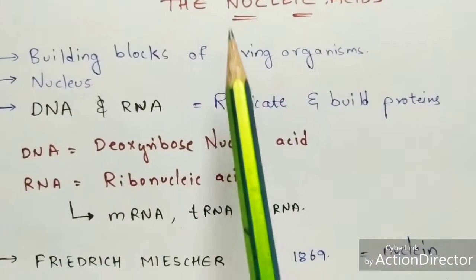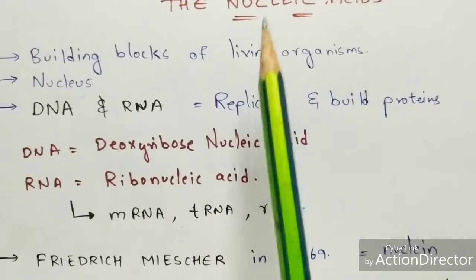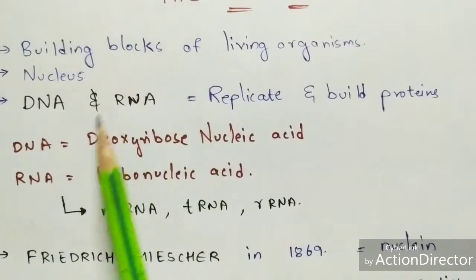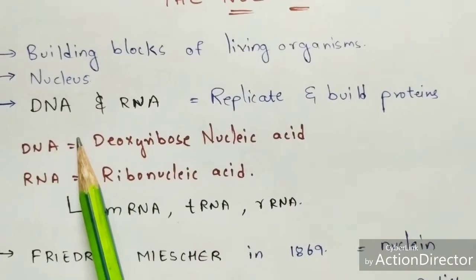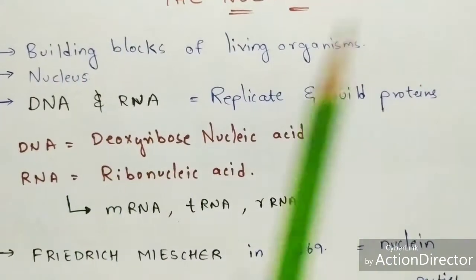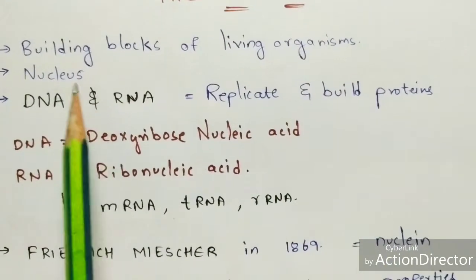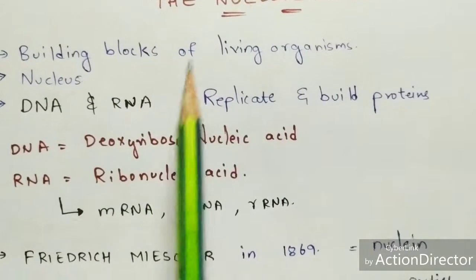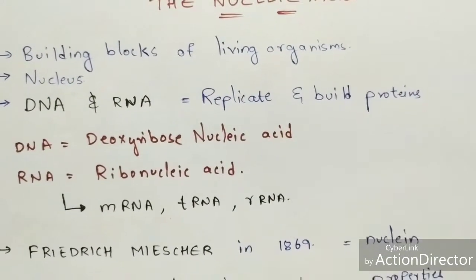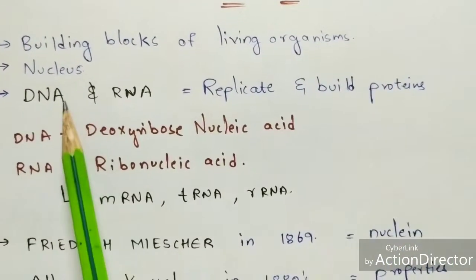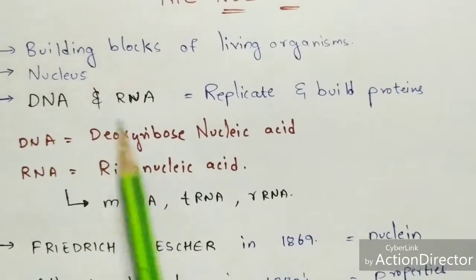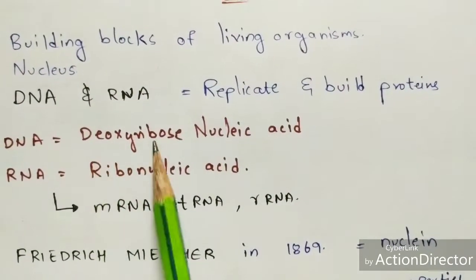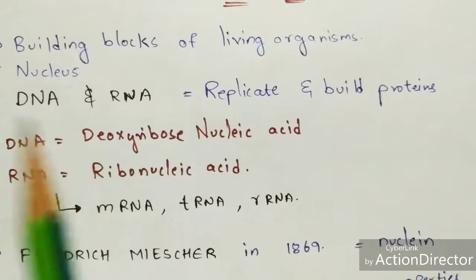By this definition, nucleic acid consists of DNA and RNA, because without DNA there will be no transfer of genetic material from parent to children. This DNA and RNA present in nucleic acid will get replicated and form proteins. The abbreviation DNA stands for deoxyribose nucleic acid and RNA stands for ribonucleic acid.